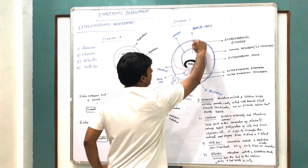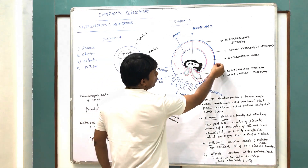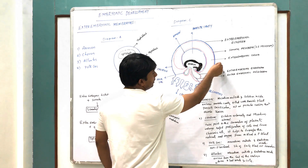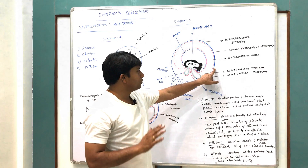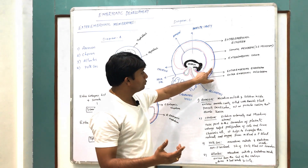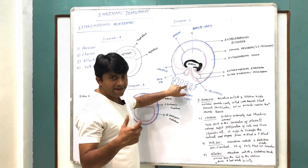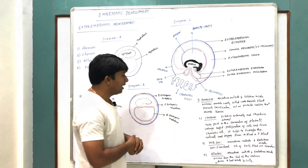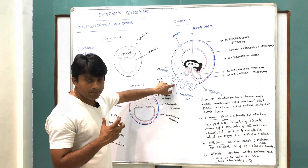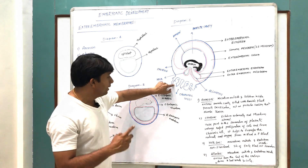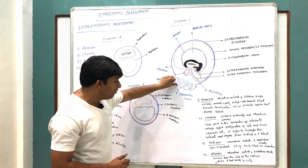The outermost layer is called chorion. Chorion is formed by ectoderm to the outside and mesoderm to the inside. The cells of the chorion proliferate rapidly and form the chorionic villi, and these chorionic villi are responsible for the formation of the placenta, which helps in the exchange of nutrients between the maternal blood and the fetal blood.